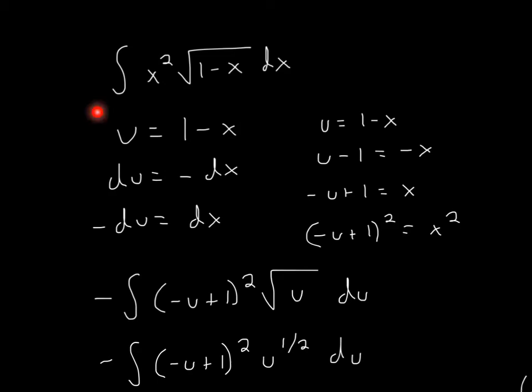For this problem, we have the integration of x squared multiplied by the square root of 1 minus x dx. What we can do is just use substitution. We can set u equal to the inside, so u is equal to 1 minus x.